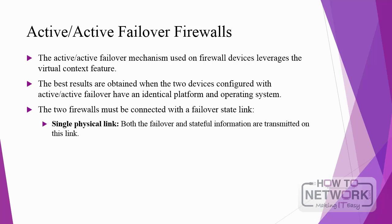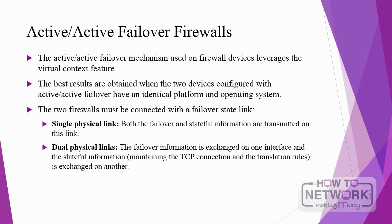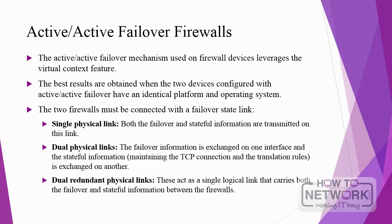This can be accomplished in three ways. First, a single physical link, where both the failover and stateful information are transmitted on this link. Second, dual physical links, where the failover information is exchanged on one interface and the stateful information is exchanged on another. Third, dual redundant physical links, which act as a single logical link that carries both the failover and stateful information between the firewalls.